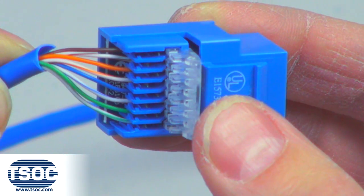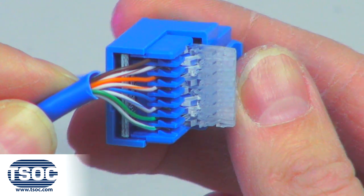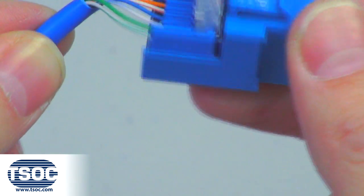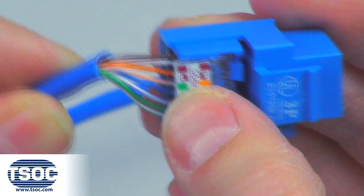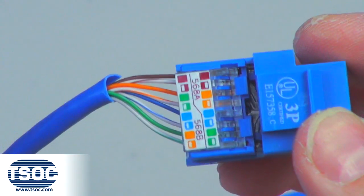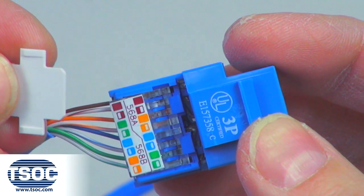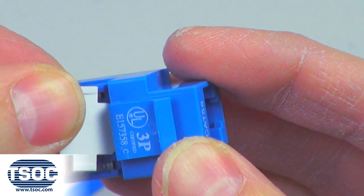Step 5. Repeat Step 4 until all pairs are terminated and verify the wiring code. Close the hinge door of the CAT-5E RJ-45 Toolless Keystone Module and replace the locking clip when complete.